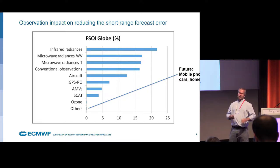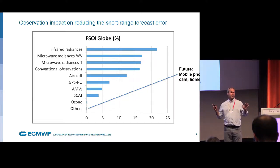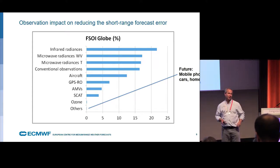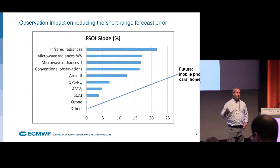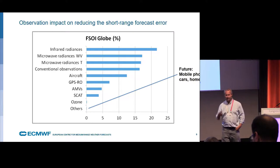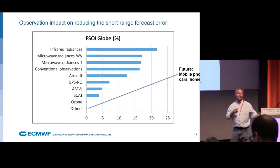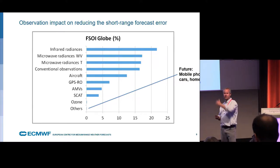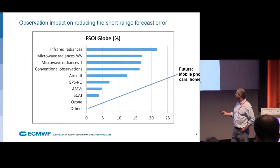The traditional numerical weather prediction view would say satellites are more important, so don't worry about IoT data. But I think there is a source of information we can tap into if we had the right HPC technologies and data movement and streaming technologies to bring them in.